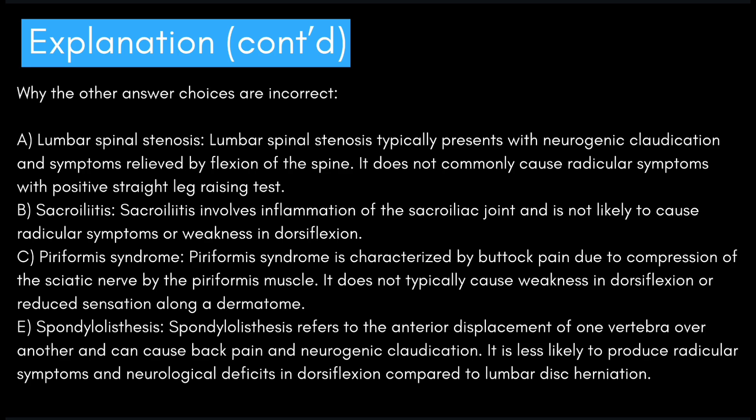The other answer choices are incorrect: Lumbar spinal stenosis typically presents with neurogenic claudication and symptoms relieved by spinal flexion — it does not commonly cause radicular symptoms with a positive straight leg raising test. Sacroiliitis involves inflammation of the sacroiliac joint and is not likely to cause radicular symptoms or weakness in dorsiflexion. Piriformis syndrome is characterized by buttock pain due to sciatic nerve compression by the piriformis muscle and does not typically cause dorsiflexion weakness. Spondylolisthesis refers to anterior displacement of one vertebra over another and is less likely to produce these specific neurological deficits.